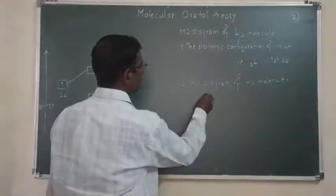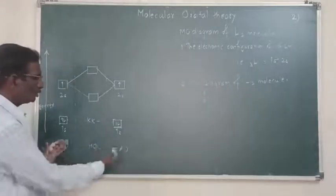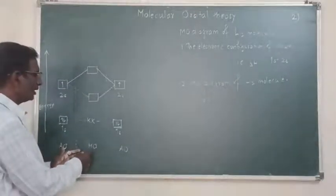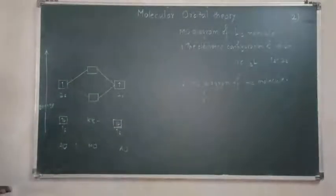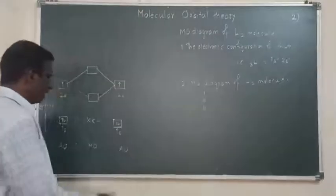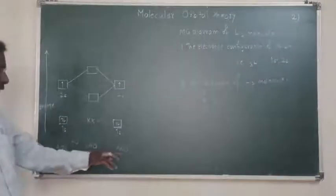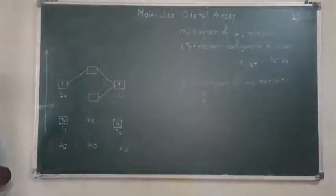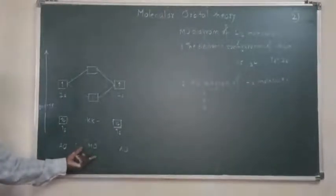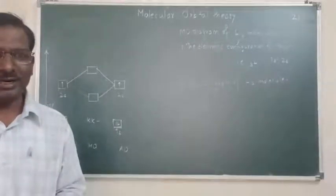This is the first point. Second point: atomic orbitals are shown on the two sides — left-hand side and right-hand side — and molecular orbitals are shown in the middle. Third point: when atomic orbitals combine to form molecular orbitals, they lose their identity. Fourth point: electrons are filled into molecular orbitals according to the Aufbau principle, Pauli exclusion principle, and Hund's rule.